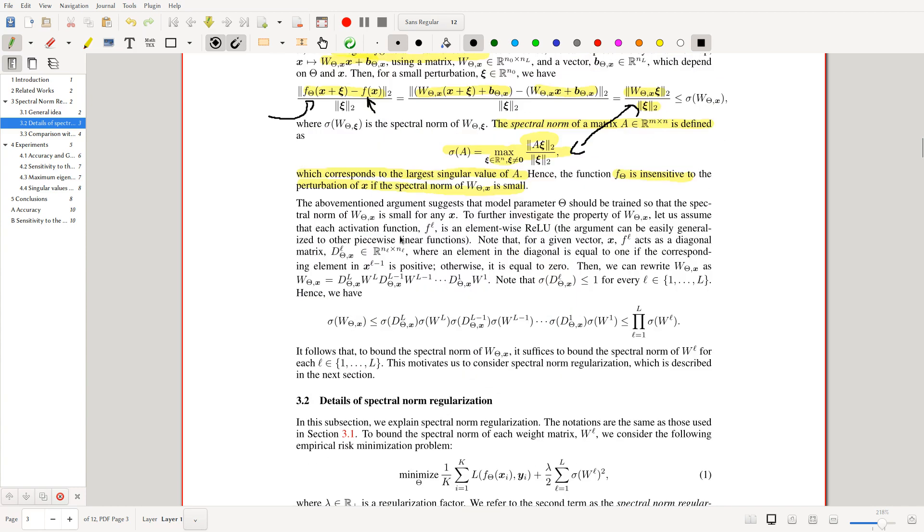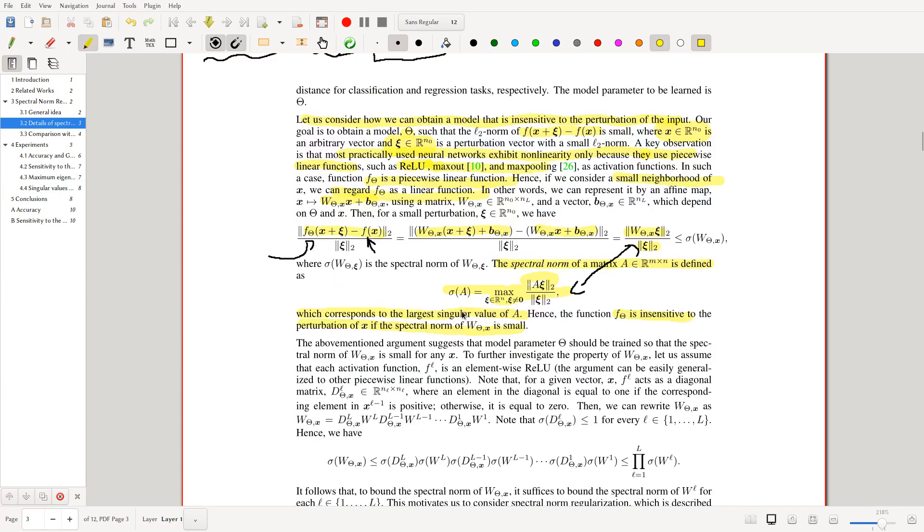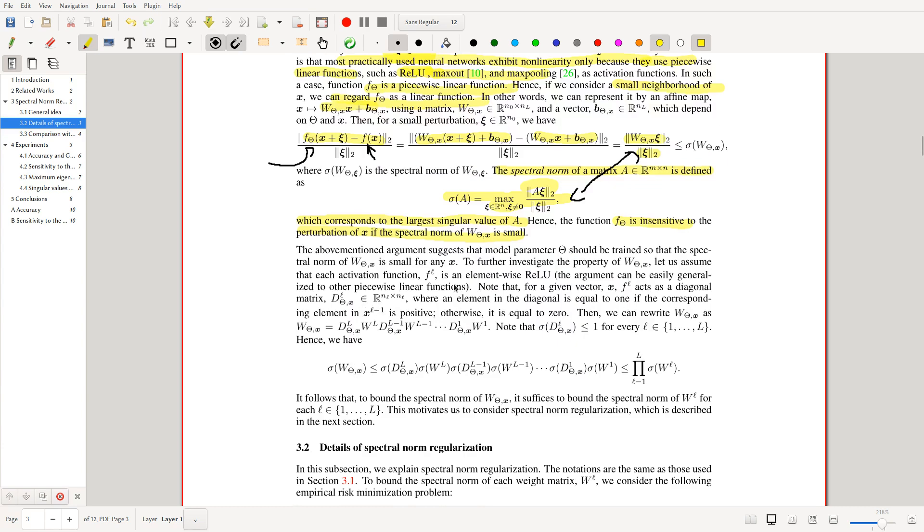Yeah. So this is their pretty simple argument, which just stands for the fact that we're looking at a neighborhood which is linearized, right? The argument above suggests that model parameter theta should be trained such that spectral norm is small. So to further investigate this, let us assume that each activation function is an element-wise ReLU. And then this can be easy to generalize.